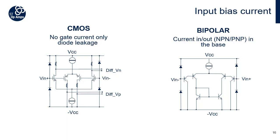In addition to errors in the voltage domain — that is, voltage offset VIO and input voltage noise density EN — current domain errors such as the input current IN are also important sources of error, especially for high source impedances above 100 kΩ. The technology used for the op-amp can significantly impact the whole precision of a system.